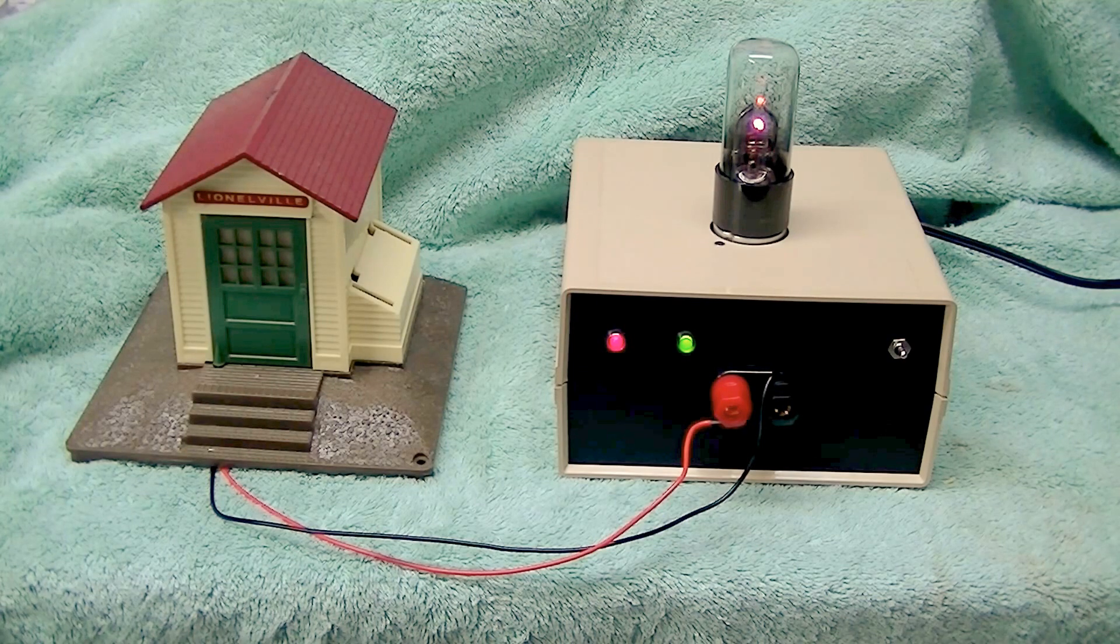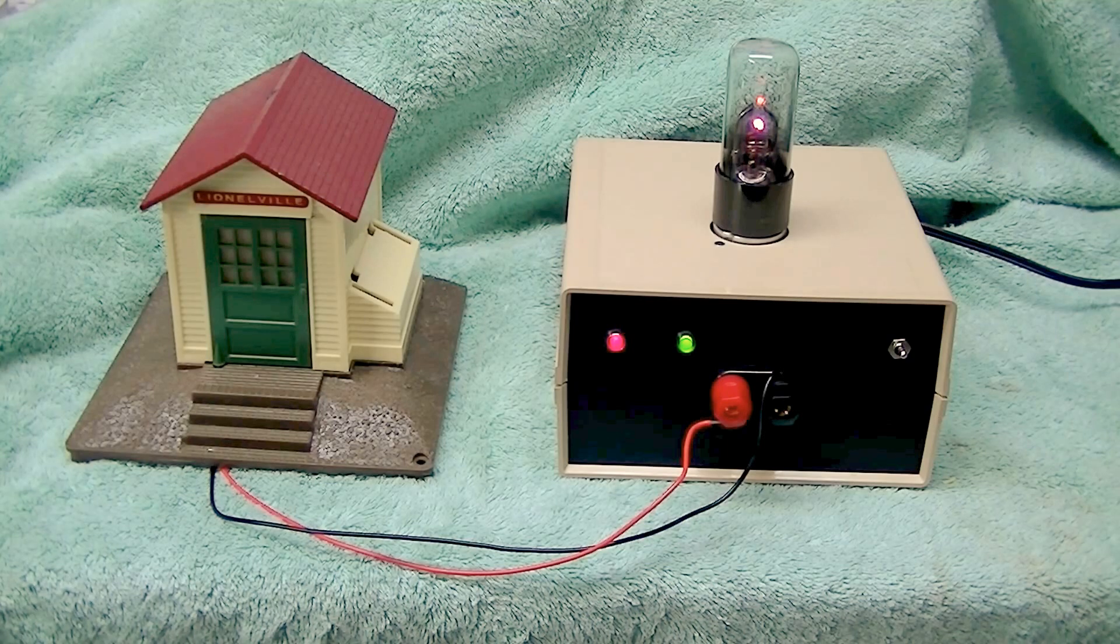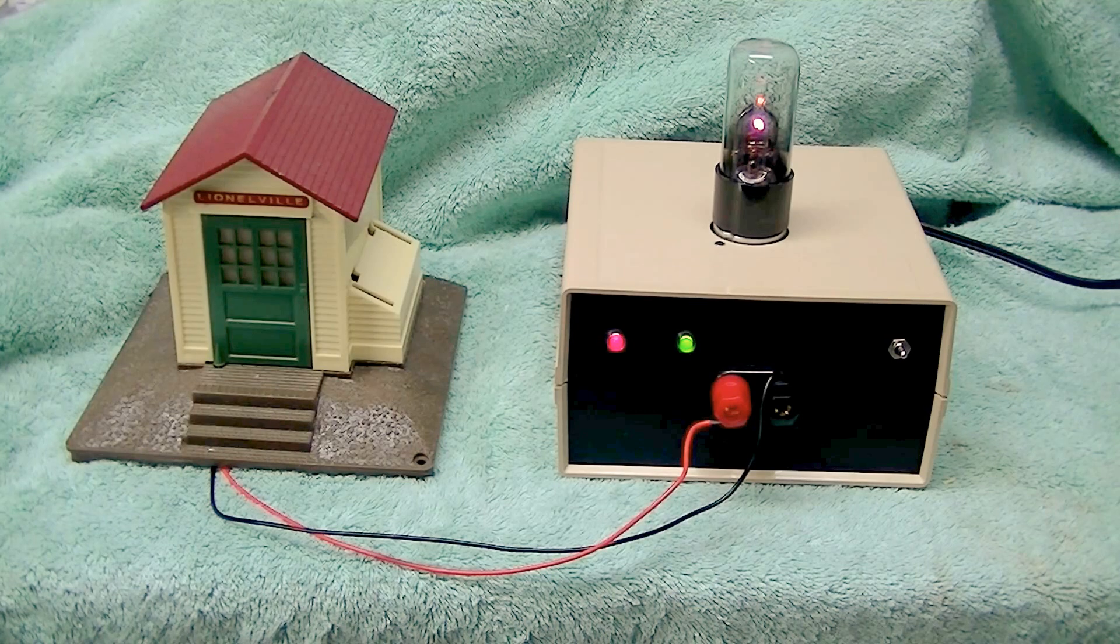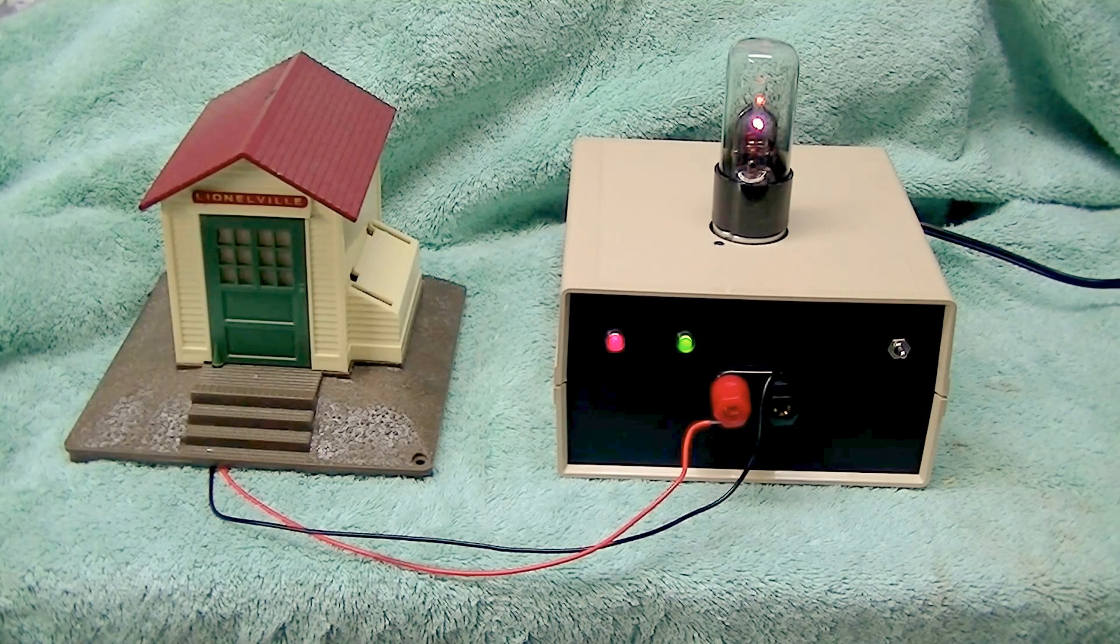When we connect the load you can see the purple glow in the tube. Again the camcorder doesn't do a great job. It looks a purple white color but in real life is a fantastic purple glow. We will try and take some better still photos.